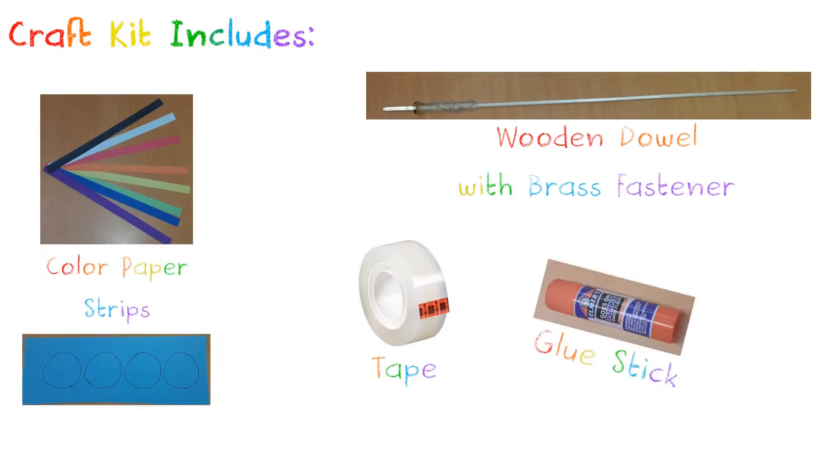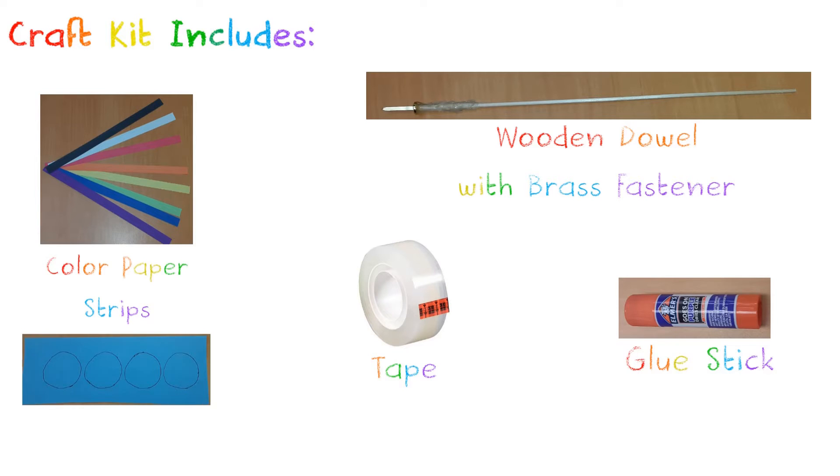If you don't have these supplies, you can pick up a craft kit at the library that includes colored paper, a long wooden dowel with a brass fastener glued on the top, a glue stick, and tape. For smaller children, some parent guidance will be needed.